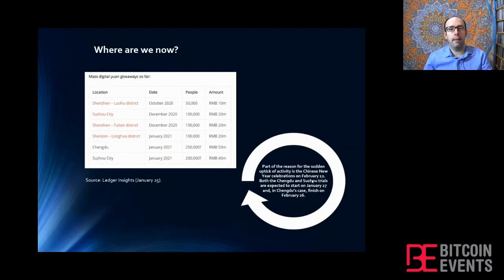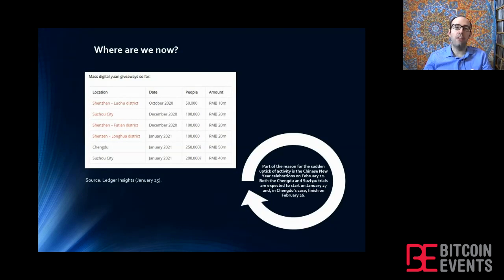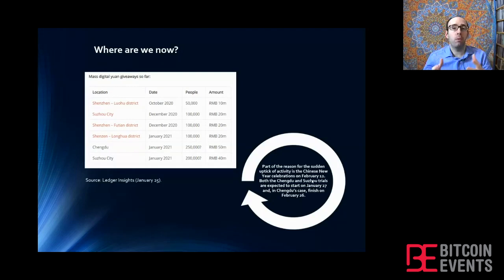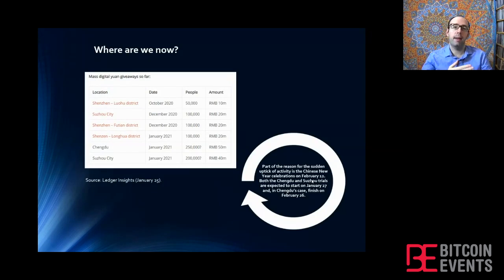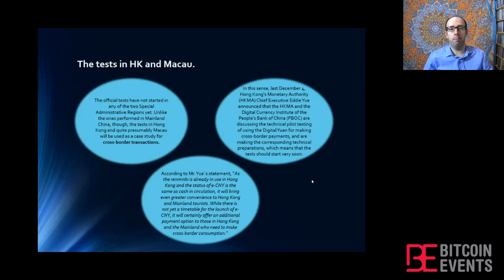Those tests have been increasing in importance since China started last April and May. They started with minor tests in four cities: Suzhou, Chengdu, Xiongan, and Shenzhen. Those tests are currently being extended to include more people and a higher amount of RMB. We've seen massive digital yuan giveaways or lotteries in some of those cities, and as shown on this slide, the amount of people and money involved in those lotteries has been gradually increasing — and so far, it's been a success.